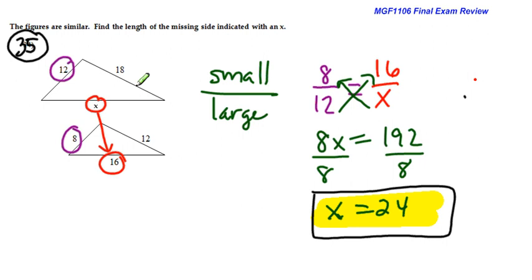This should be a larger number because it is in the larger triangle. Answer to number 35 is 24.